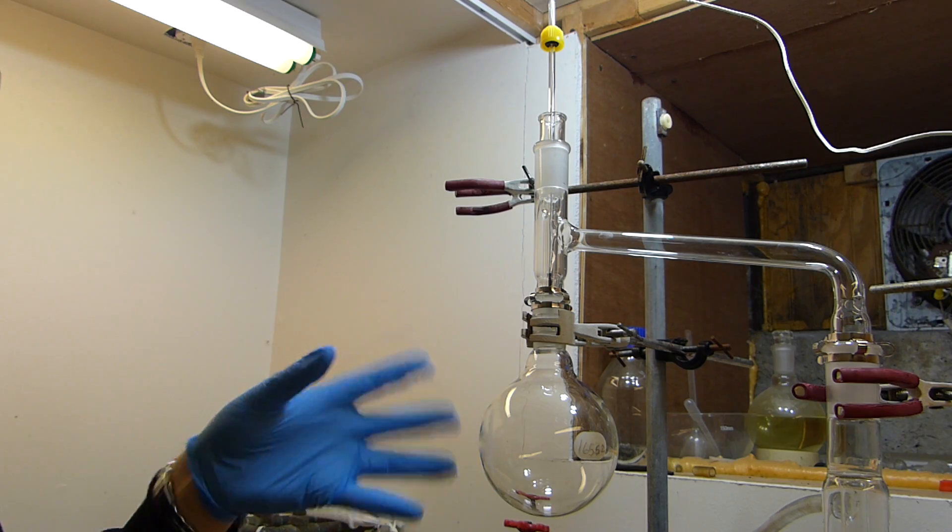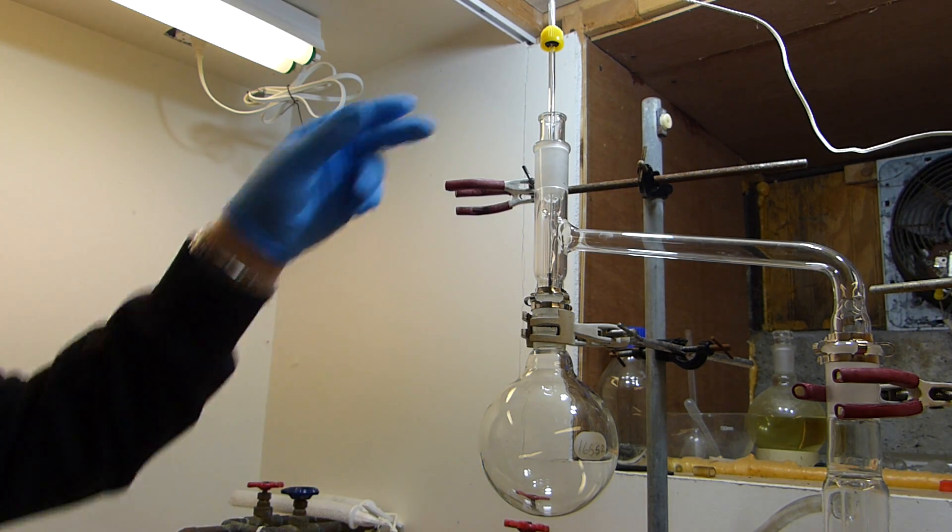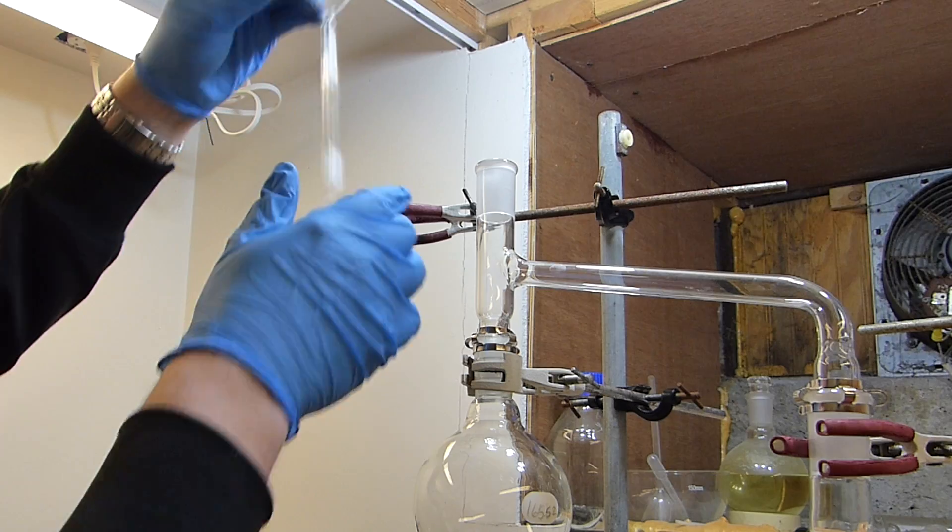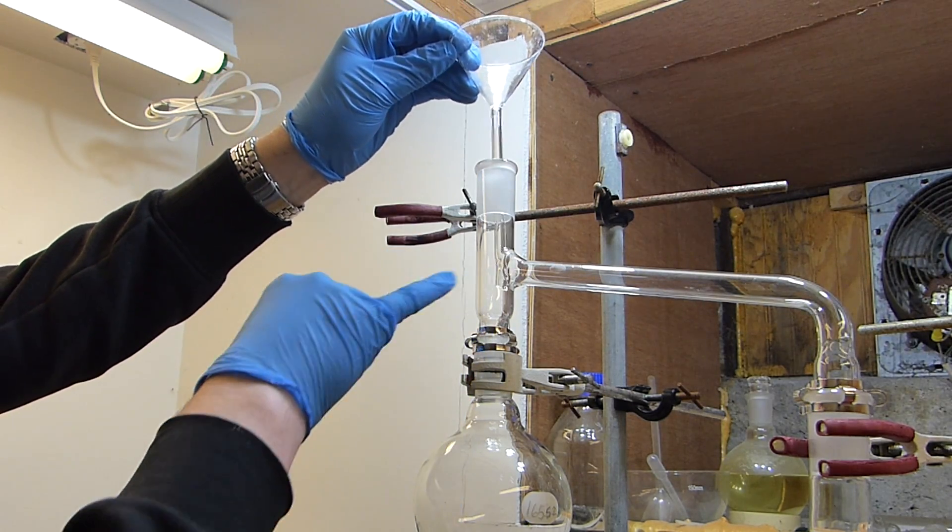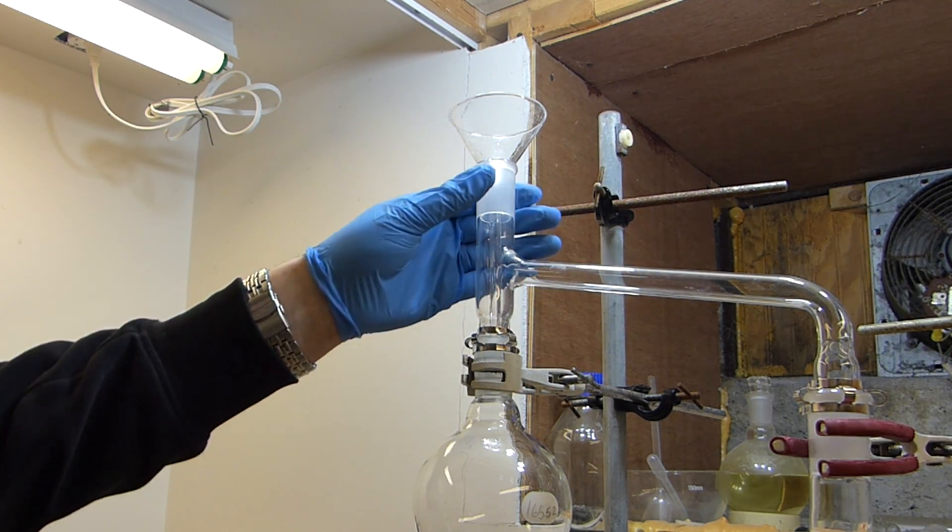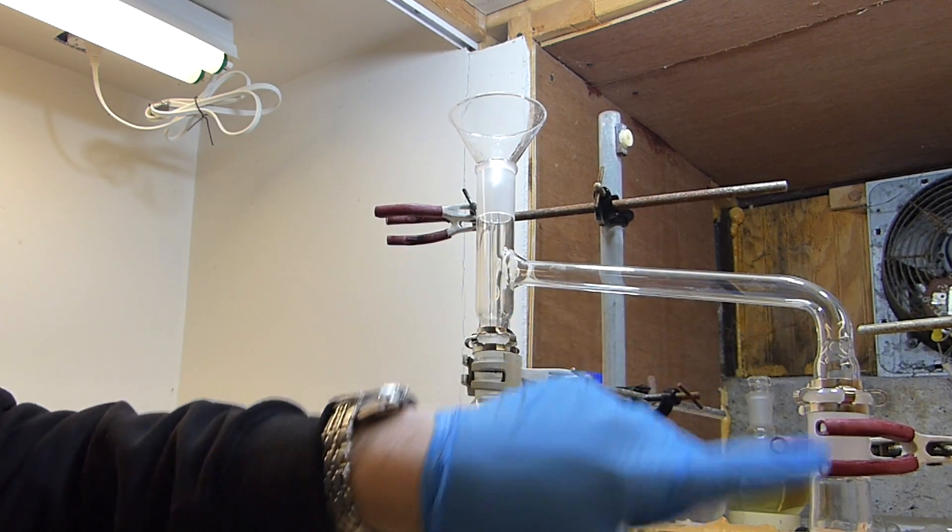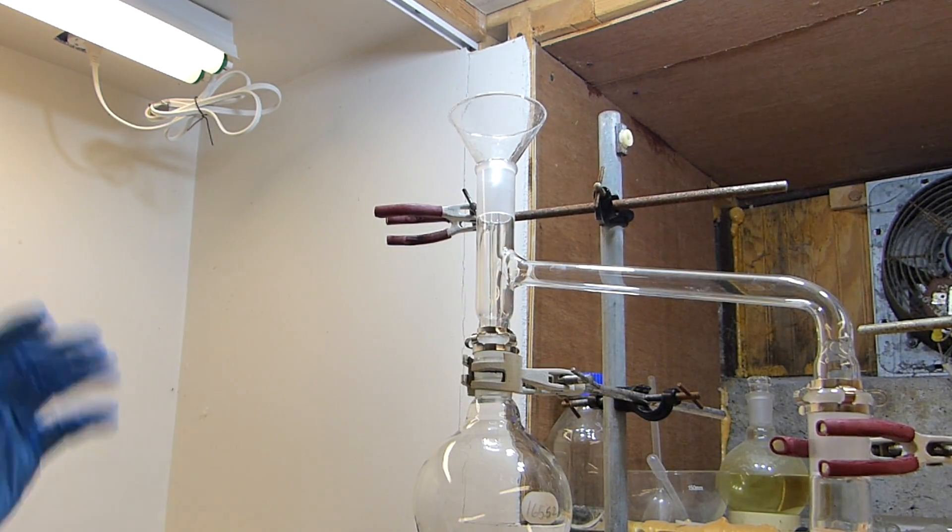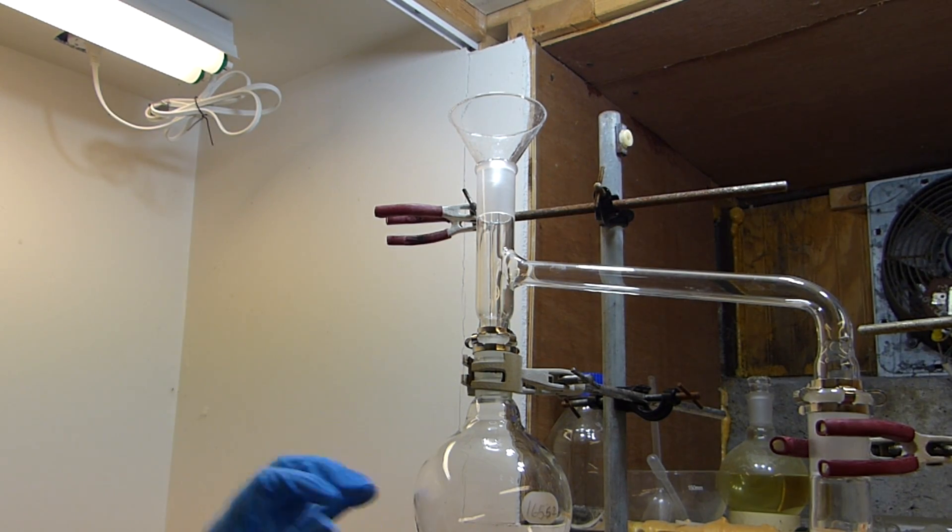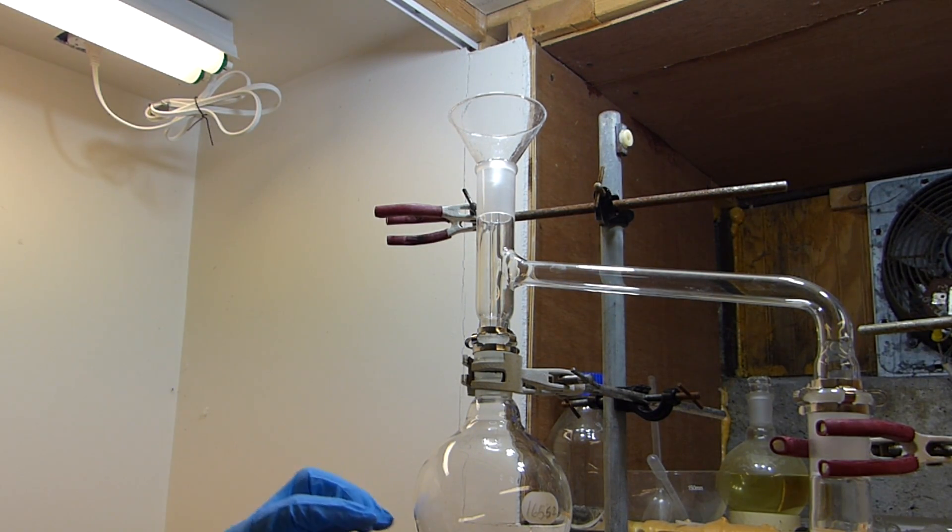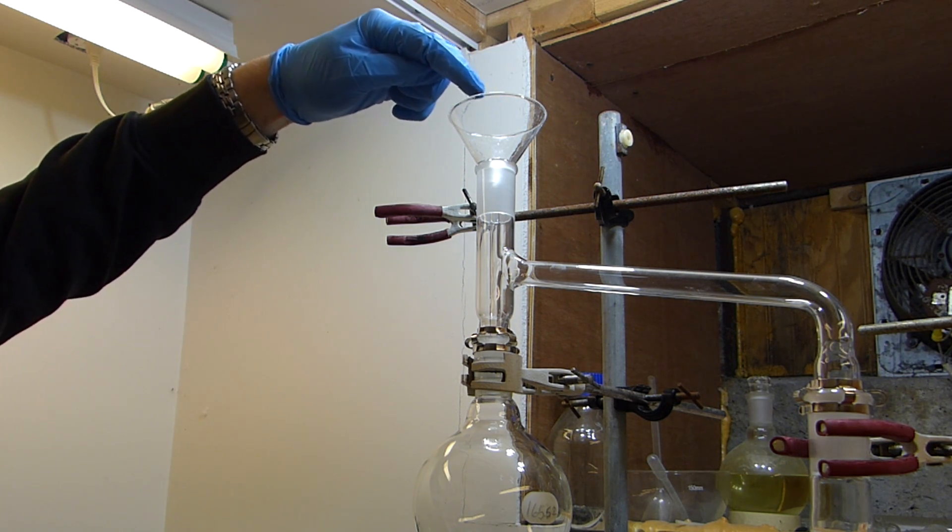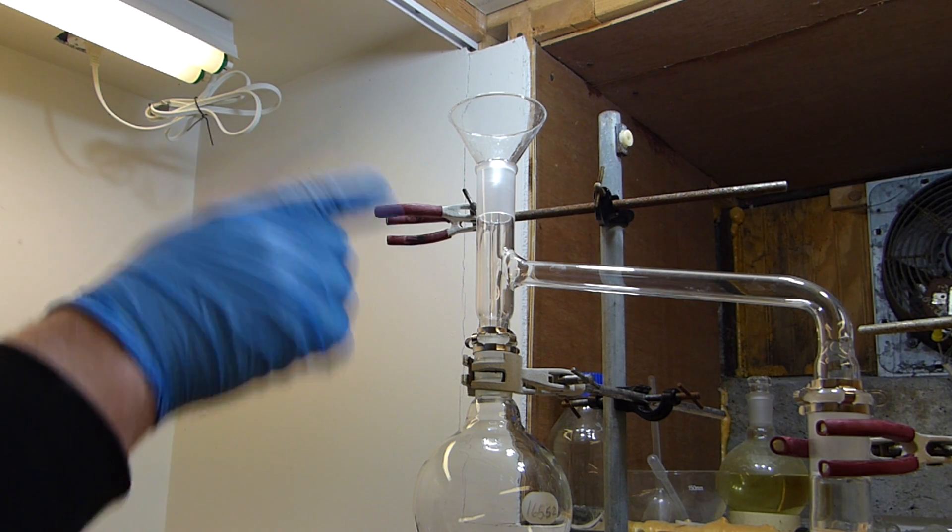This apparatus is set up in a special and rather clever way. What I can do is remove this thermometer well right here and take the thermocouple tube out of it. Now this funnel, you'll notice the stem goes past the sidearm here on the still head, which means that I can charge the acid without risking getting dirty acid into the clean side.